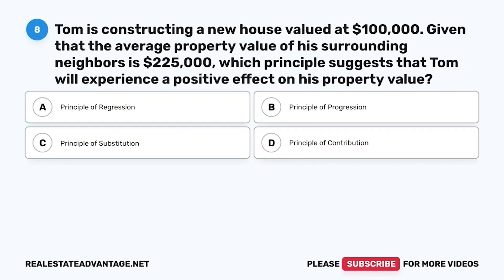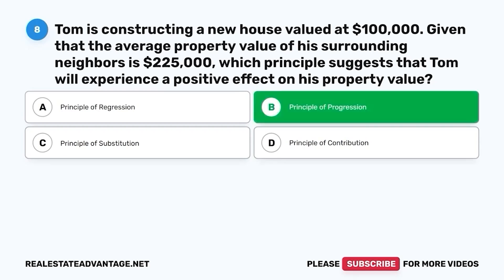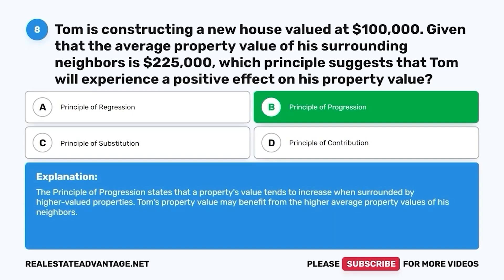Question 8. Tom is constructing a new house valued at $100,000. Given that the average property value of his surrounding neighbors is $225,000, which principle suggests that Tom will experience a positive effect on his property value? A. Principle of regression. B. Principle of progression. C. Principle of substitution. D. Principle of contribution. The correct answer is B. Principle of progression. The principle of progression states that a property's value tends to increase when surrounded by higher-valued properties.